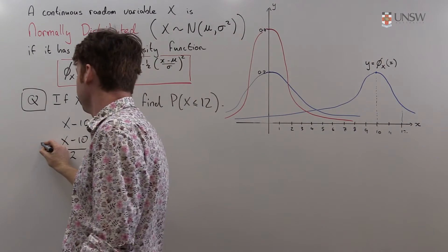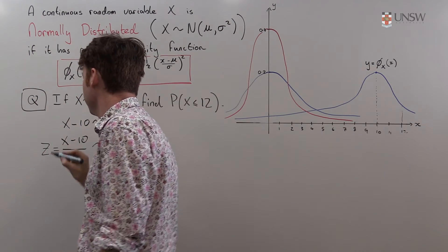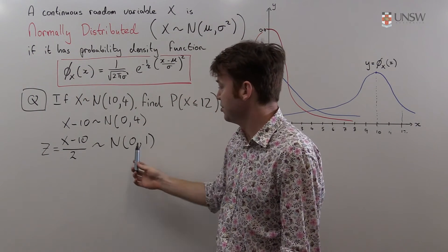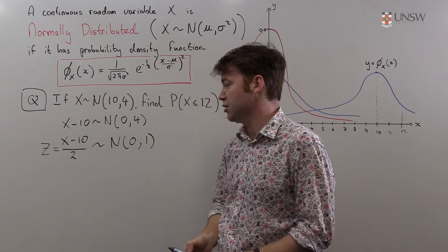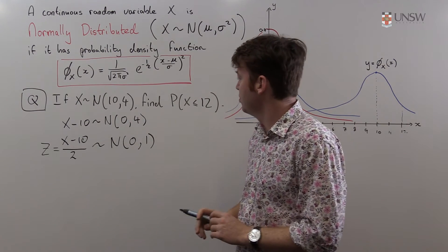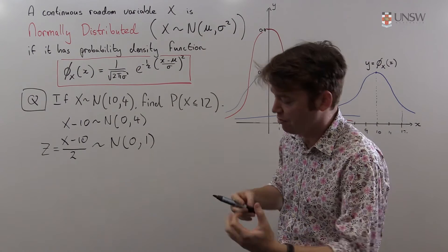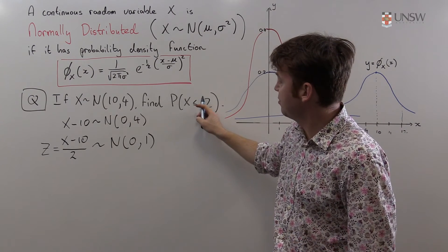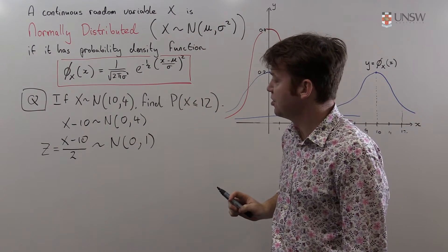Let's call this thing Z which is the traditional name for a random variable which is normally distributed with expected value 0 and variance 1. So we have Z as it relates to X. Now we need to phrase this question here in terms of Z.